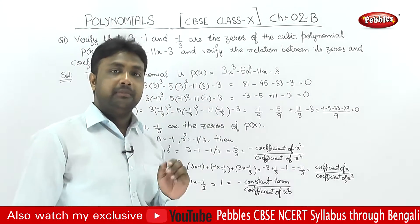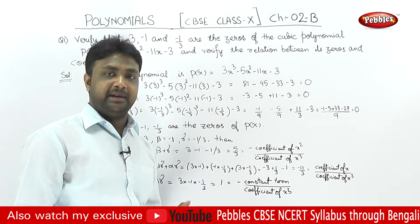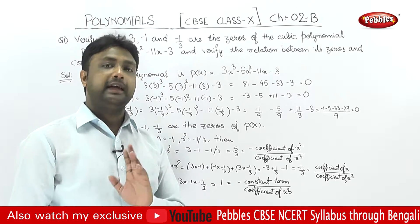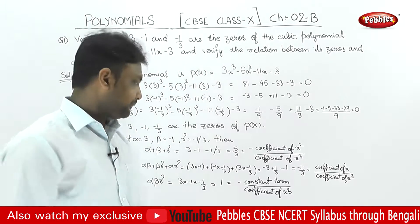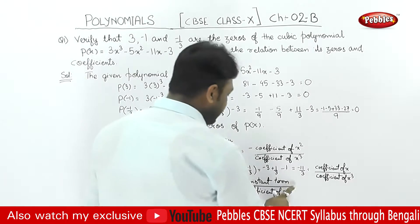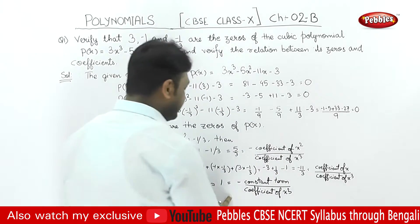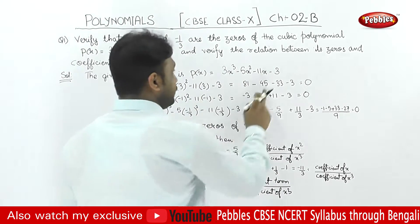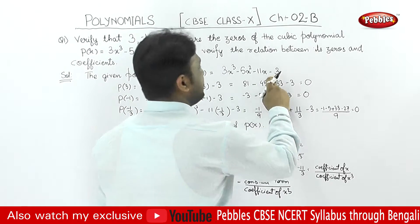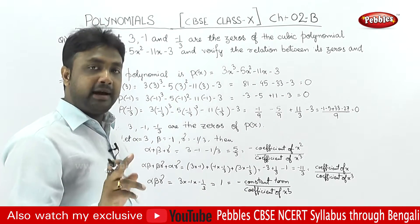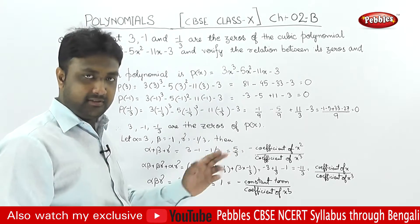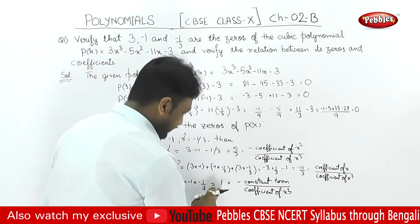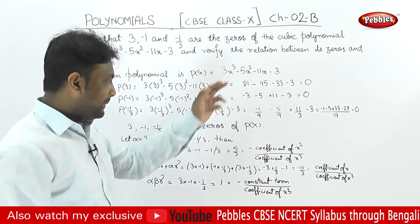For alpha into beta into gamma: 3 into (minus 1) into (minus 1 by 3) equals 1. And minus d by a equals minus (minus 3) by 3 equals 1. These are equal. So all three relations between the zeros and the coefficients of the cubic polynomial are verified.